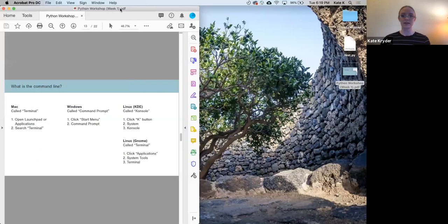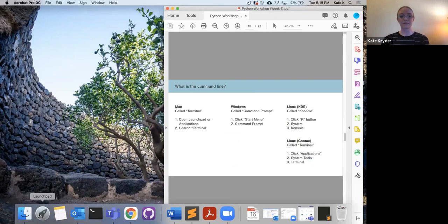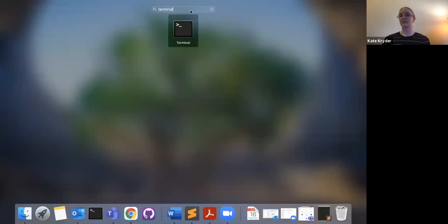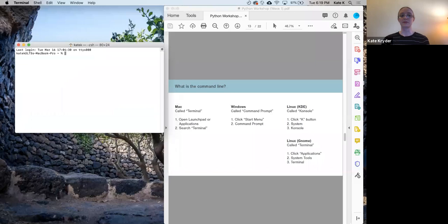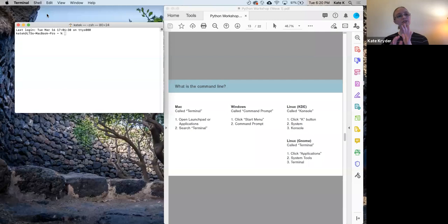I'm on a Mac today. On my computer I have Launchpad. If I click on that and search for Terminal, a program comes up and when I open it I get a window that looks like this. You may have a different version — if you're on Windows, yours might be black with white text. As long as you've gotten a program that looks like Terminal or Command Prompt, you've probably gotten to it successfully. I see only a few green checks right now — there was a flurry, thank you. If anyone is lost, now would be a great time to put questions in chat.